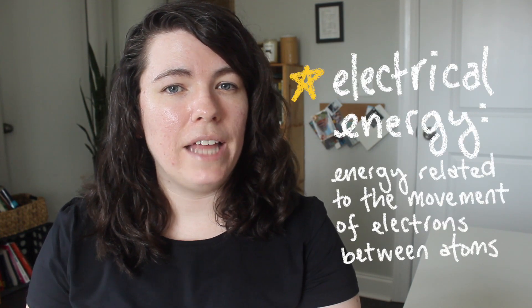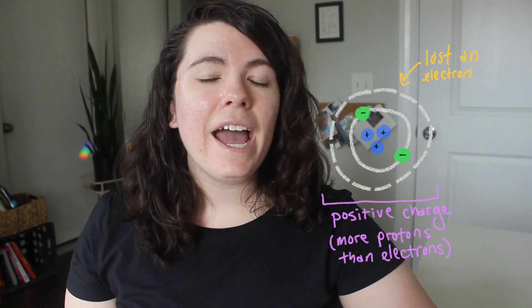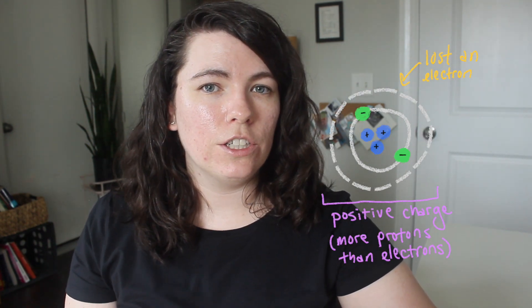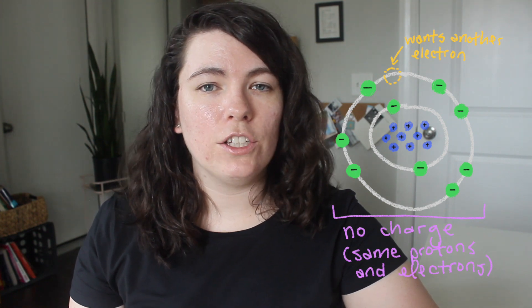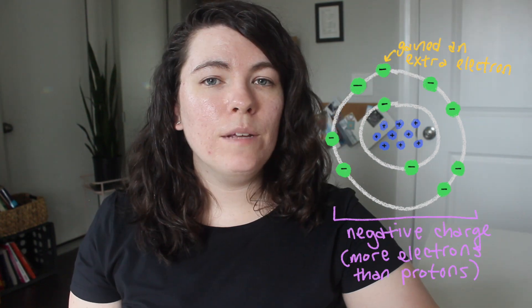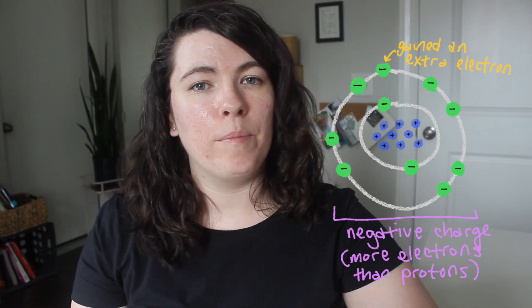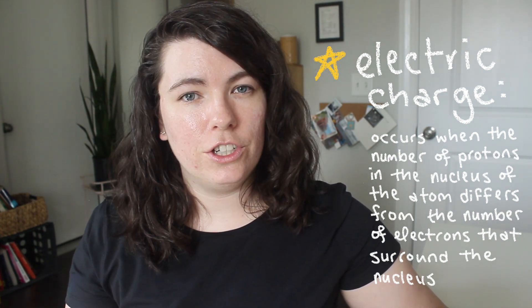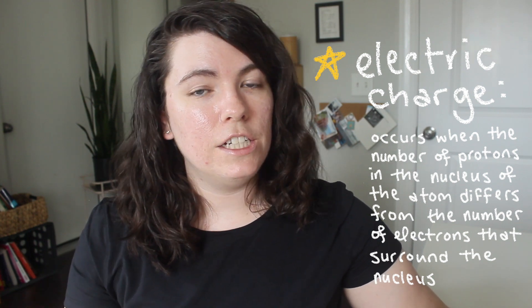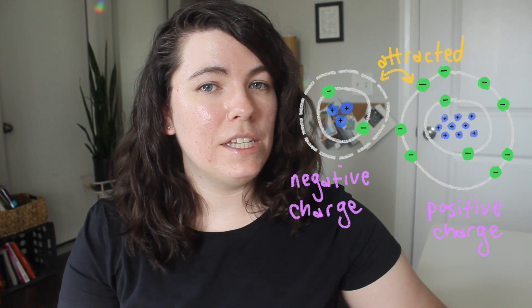In a previous video, we learned about the different types of energy. We talked about electrical energy having to do with electrons moving between atoms. Some atoms have electrons that are only loosely attracted to their nucleus, and when they lose an electron, they become positively charged because they have more positive protons than negative electrons. Some elements are more inclined to pick up extra electrons to fill their valence shells. When an atom gains an electron, it becomes negatively charged because it has more negatively charged electrons than positively charged protons. This state of being more positive or more negative is known as an electric charge. Electric charge causes objects to be either attracted to or repelled by other objects that also have an electric charge. Like charges repel and opposite charges attract.